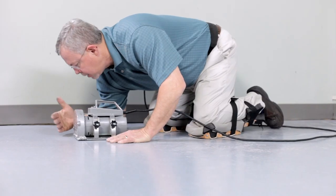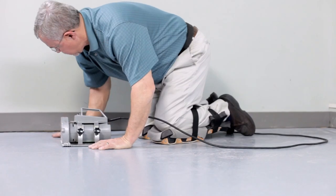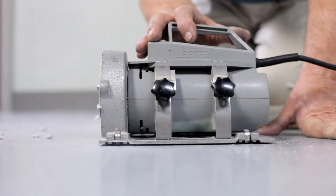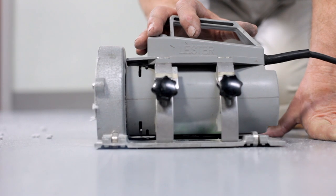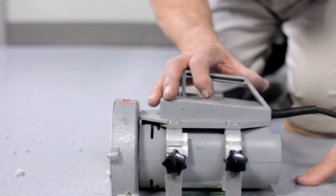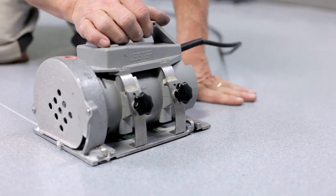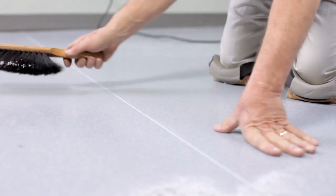Next, the seam cut must be grooved using either a power or hand groover. It's important that the groove be centered on the seam cut and be approximately two-thirds the thickness of the flooring product. Sufficient time should be allocated so that the seams can be grooved and welded in the same day to prevent contamination of the groove.